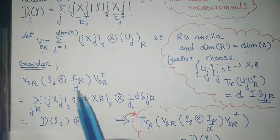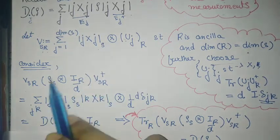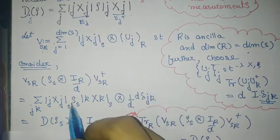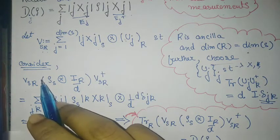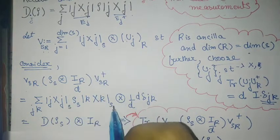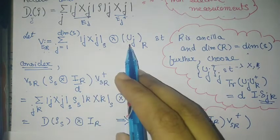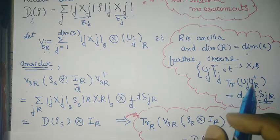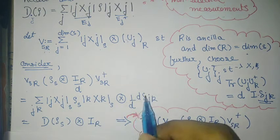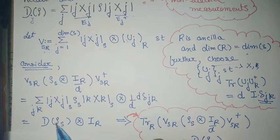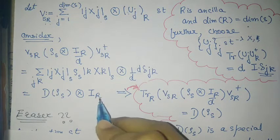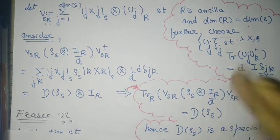Taking this unitary operation and computing the result: as it acts on state ρ_S, from one side we get |j⟩⟨j| and from the other side |k⟩⟨k|, so there is a double sum over j and k. Due to the orthogonal unitary property, we get a Kronecker delta, and the entire sum collapses to identity in the ancilla space and ρ_S in the system space. Finally, tracing out the ancilla gives the final dephasing operation.